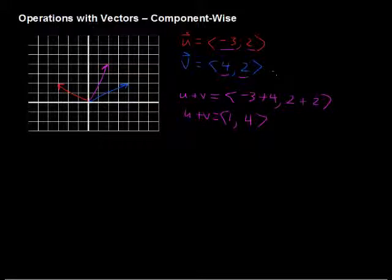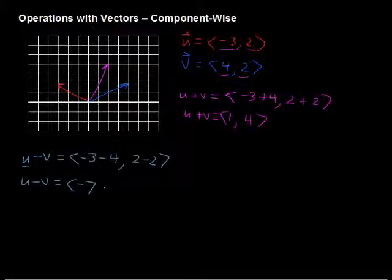There are other things you can do component-wise. What if we wanted to subtract u - v? It makes sense—we would do u, negative 3, minus 4, and then 2 minus 2. We would subtract those directly in the order given, u first then v. So u - v would have components <-7, 0>.